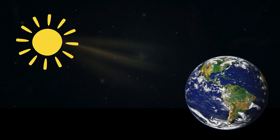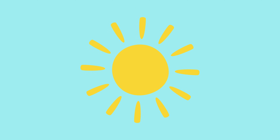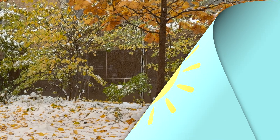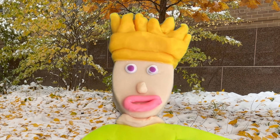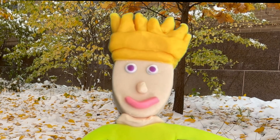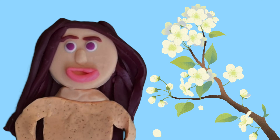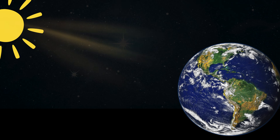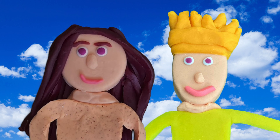In the summer, the part of the Earth that's tilted towards the sun gets more sunlight, which makes that area warmer. In the winter, part of the Earth is tilted away from the sun — it gets less sunlight and it gets colder. And in the spring and fall, the Earth is tilted in a way that both the northern and southern hemispheres get about the same amount of sunlight, so the weather is mild.